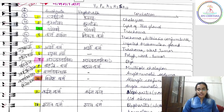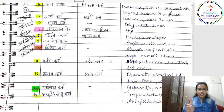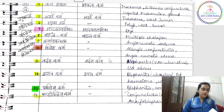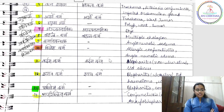Next, what we will be learning today: Shushka Arsha, Anjana Namika, Bahalam Vartma, Vartmaava Bandhaka, and Klishta Vartma — these five disorders. Shushka Arsha is a Sannipataja Vyadhi, Anjana Namika is a Raktaja Vyadhi, Bahalam Vartma and Vartmaava Bandhaka are both Sannipataja Vyadhis, and Klishta Vartma is a Raktaja Vyadhi again.